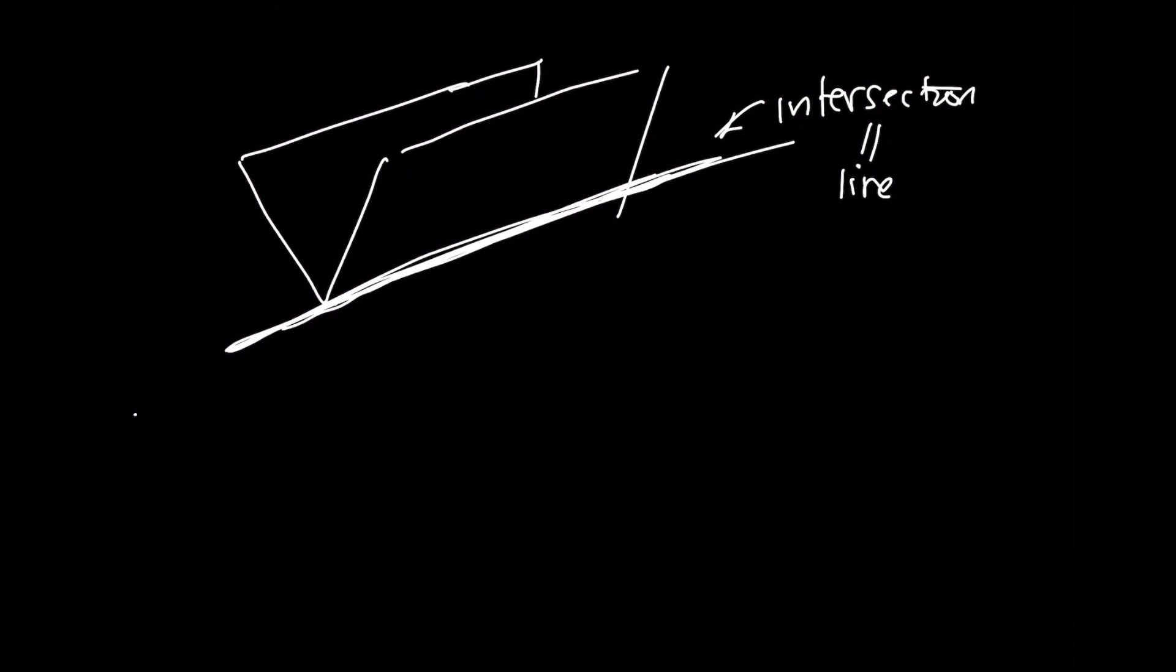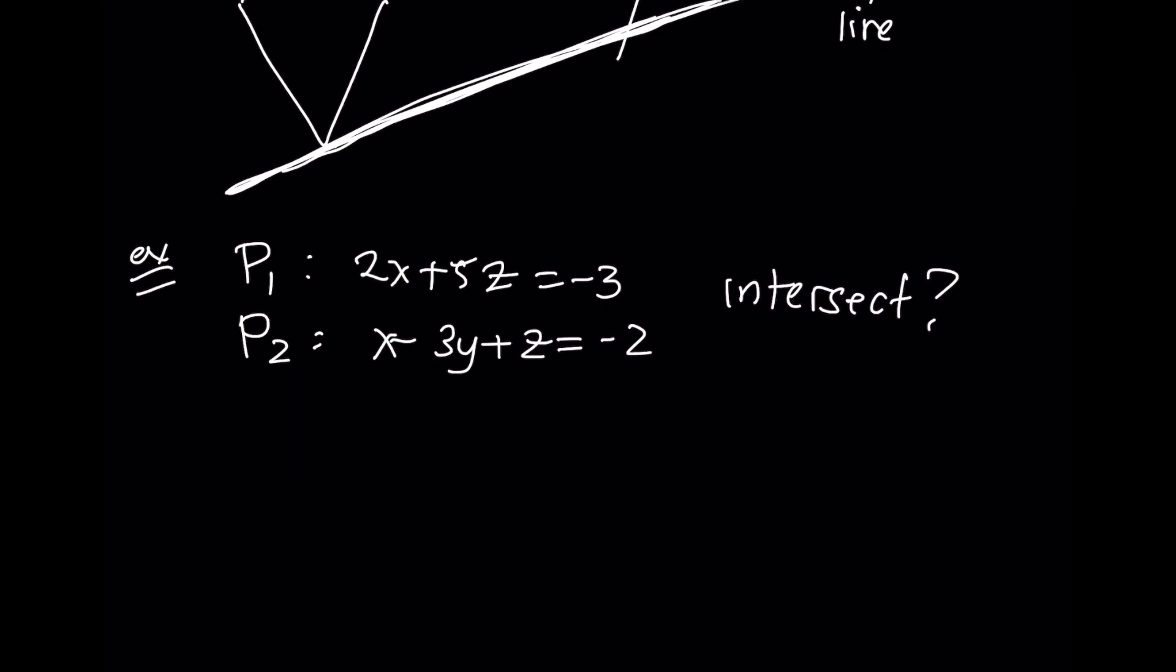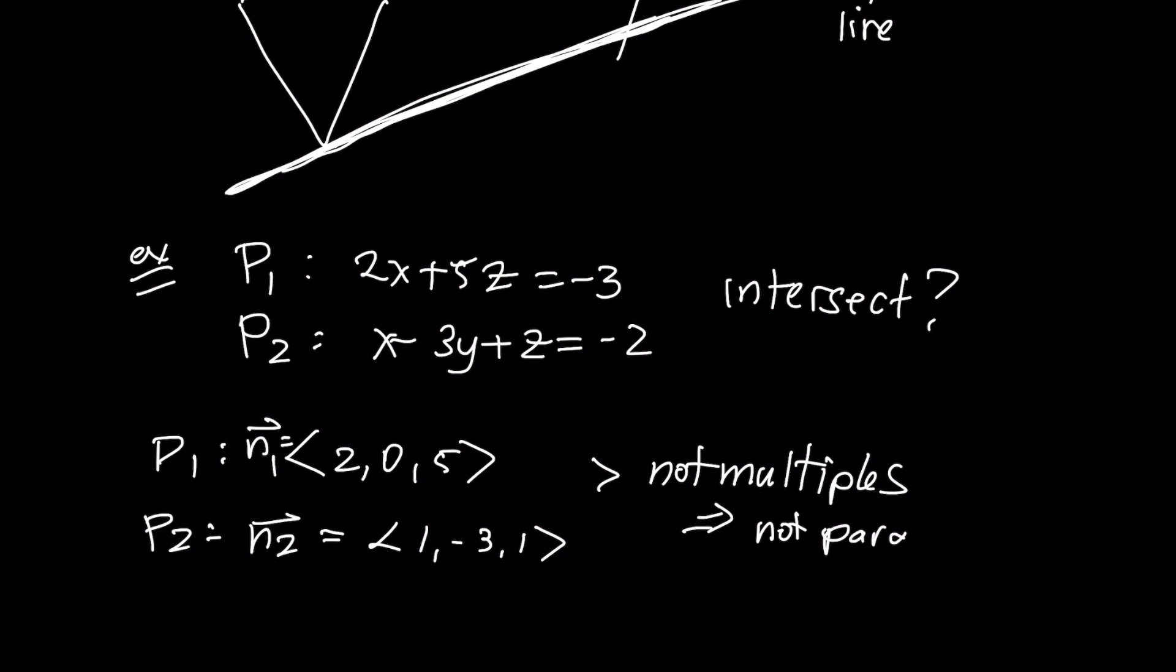So as an example, I'm going to give you two planes. The first plane will have an equation 2x + 5z = -3. And then the second plane will be x - 3y + z = -2. Do these planes intersect? For P₁, n₁ is <2, 0, 5>. And for P₂, the normal vector n₂ is <1, -3, 1>. I'm just reading off the coefficients in front of the x, y, z terms. These two vectors are not multiples. If these vectors are not multiples, that means they are not parallel. And that means that the planes are not parallel. And that means my two planes are going to intersect.